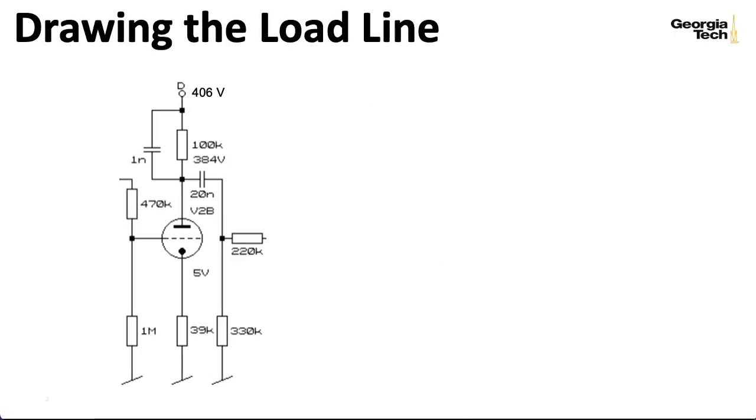So here is our circuit, and to compute the DC bias points, we can get rid of the capacitors, open those up. And in order to draw a load line, as we talked about previously, we need two points.